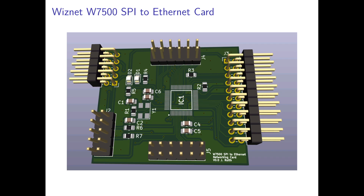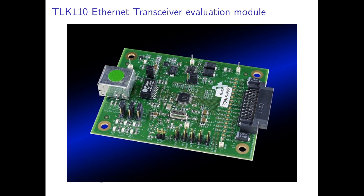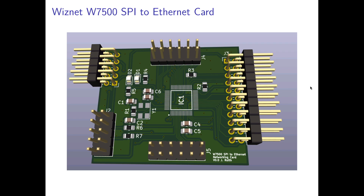But what kind of Ethernet transceivers will I connect to my card? The first one is the TLK110 Ethernet transceiver evaluation module from Texas Instruments, which I happen to own already. You can see here we have the Ethernet transceiver, twisted pair Ethernet with an RJ45 connector, and some pins. With jumper wires, we can connect these pins to the pin header, and this will give us an SPI to twisted pair Ethernet networking card.